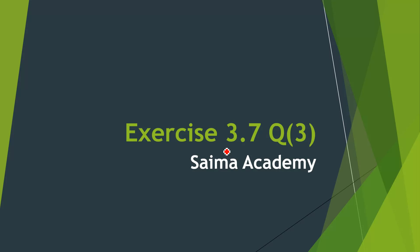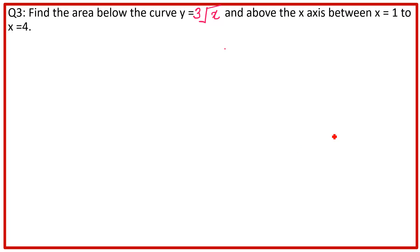In this lesson, we will solve 3.7 question number 3. The question is: find the area below the curve y = 3√x and above the x-axis, between x = 1 to x = 4. देखें, देखने में यह question थोड़ा सा difficult लगता है, लेकिन बहुत easy है।